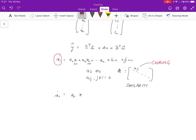x2 dot is given by a2,1 x1 plus a2,2 x2 plus a2,n xn plus b2 u plus f2 w2.